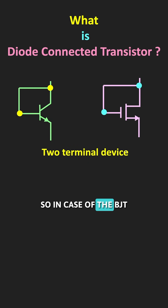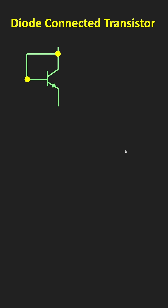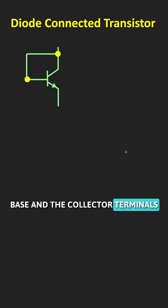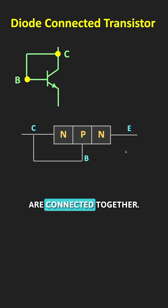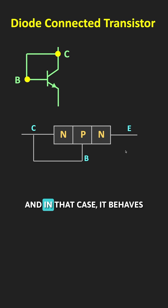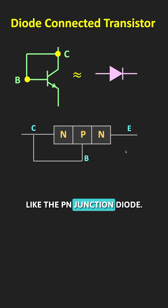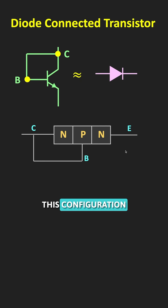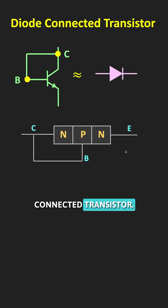In the case of the BJT, to make it work as a diode-connected transistor, the base and the collector terminals are connected together. In that case, it behaves like a PN junction diode, and that is why this configuration is called the diode-connected transistor.